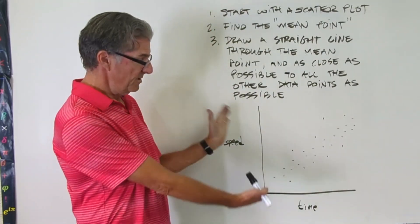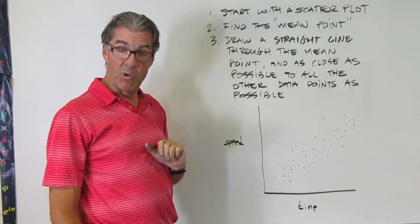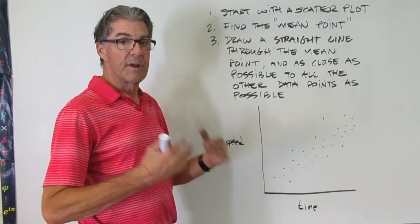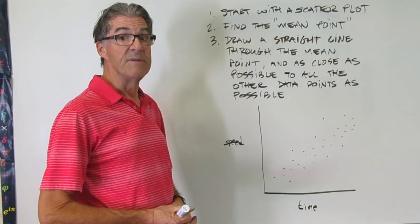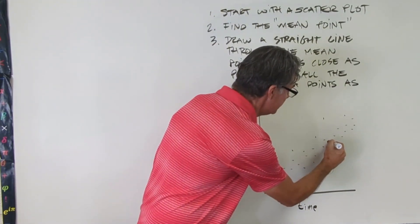First off, start with a scatterplot. Shazam, you got that. Two, find the mean point. So in this case, I'm just going to assume a certain point is the mean point, but I'm going to show you how to calculate that in a minute. But here we go. So let's just assume that that is the mean point.